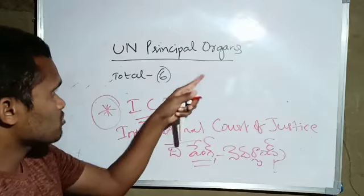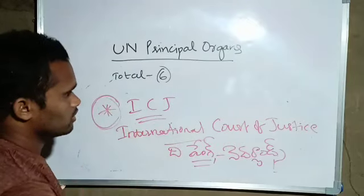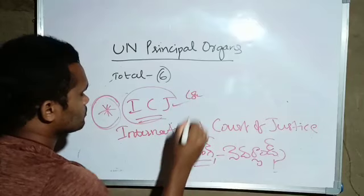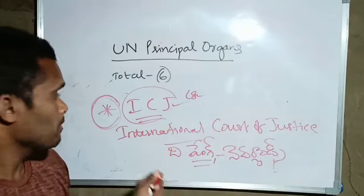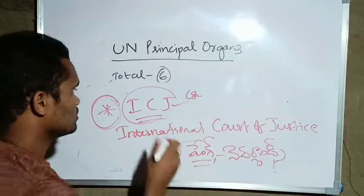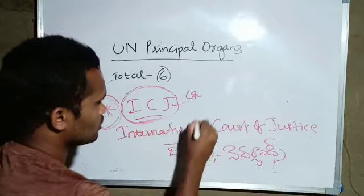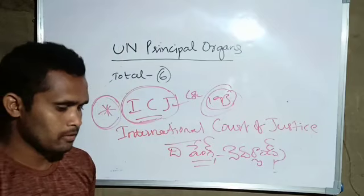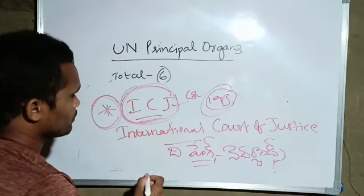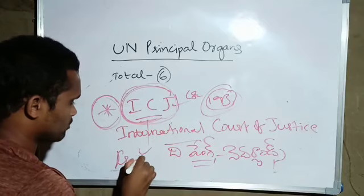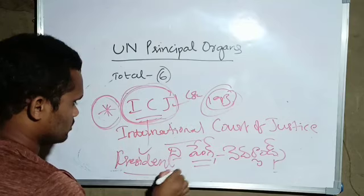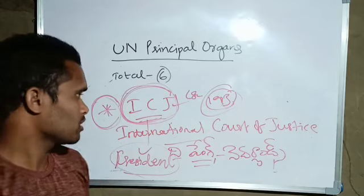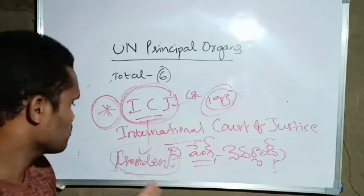ICJ, one of the principal organs. The head is a President, not Chief Justice - it's called President.